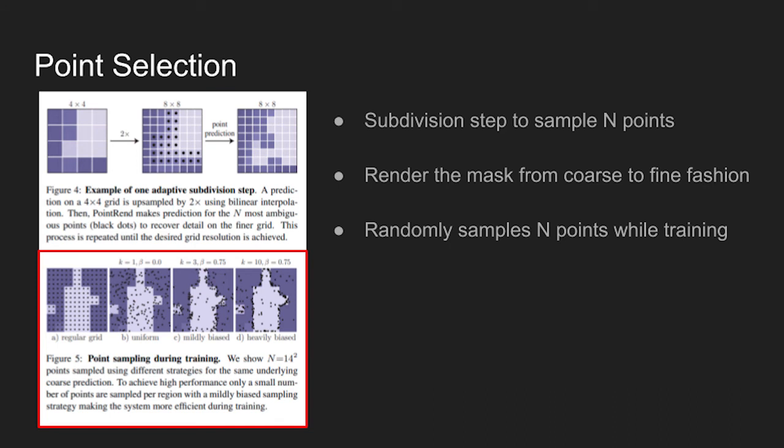While training the network, a non-iterative strategy based on random sampling is used to speed up the training process. This is shown in the bottom figure. Depending on the sampling strategy, the model selects N points on a feature map to train on.